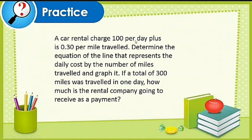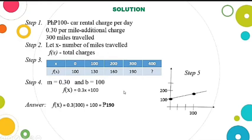A car rental charges 100 pesos per day plus 0.30 per mile traveled. Determine the equation of the line that represents the daily cost by the number of miles traveled and graph it. If a total of 300 miles was traveled in one day, how much is the rental company going to receive as a payment? What is our step 1? Given, the given information. 100 pesos is the car rental charge per day. 0.30 per mile additional charge. 300 miles traveled. These are our given information from the problem.